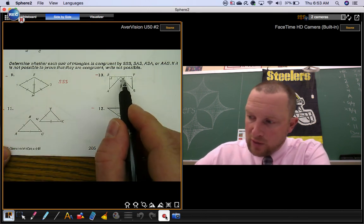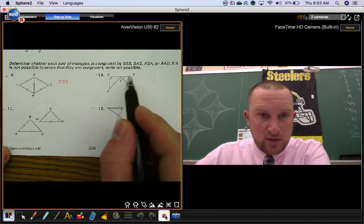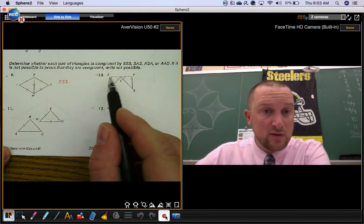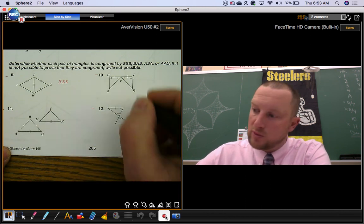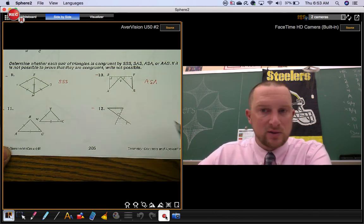Number ten, we have congruent angles here. We also have perpendicular segments here which give you 90 degree angles which are congruent angles as well. And you have congruent sides in between. That's angle side angle.